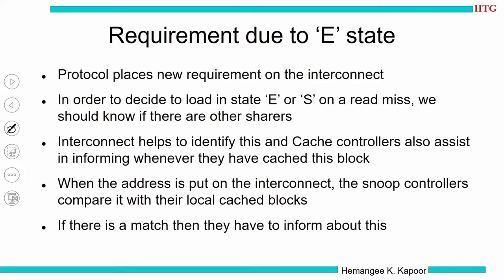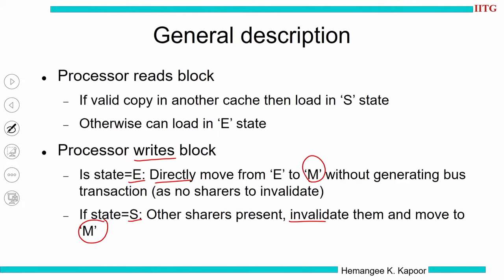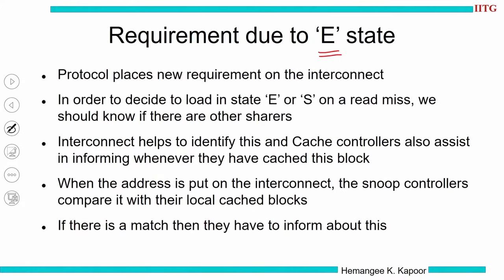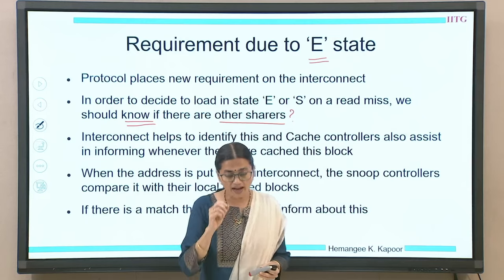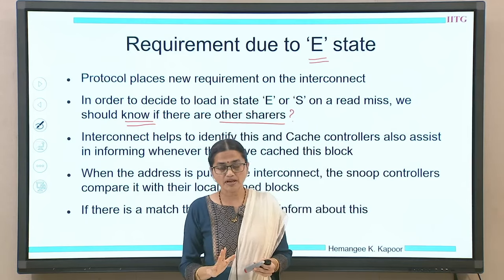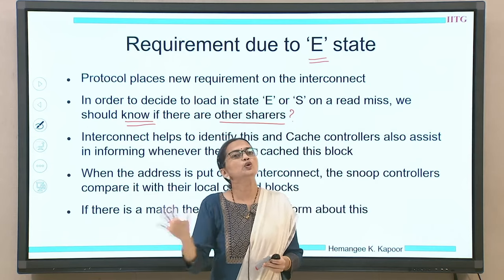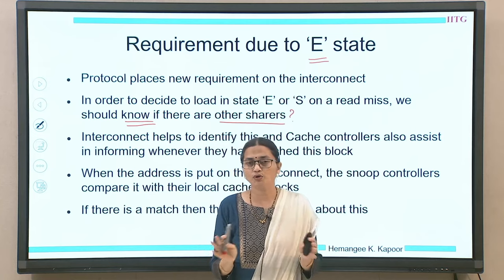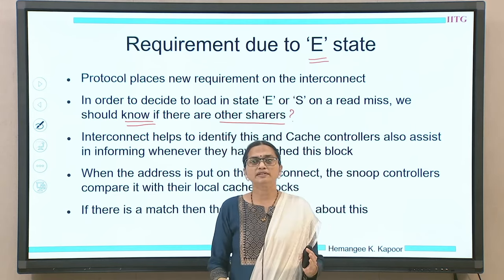What hardware requirements does the E state introduce? We need to know if there are no other sharers. Every cache controller should be able to tell if they have the data block — if they do, they should assert a signal saying 'yes I have the copy.' If nobody responds, this cache knows there are no other sharers. You can pause the video and think for yourself how to implement this in a real system.